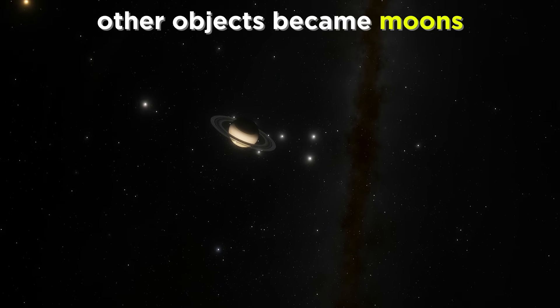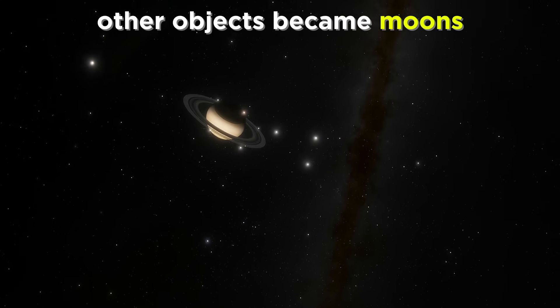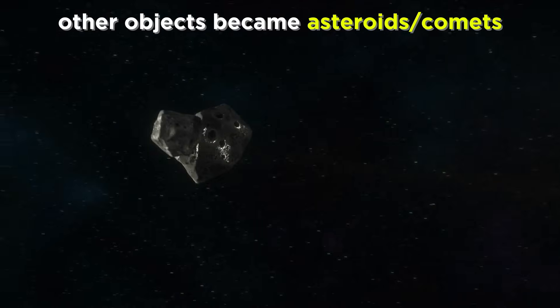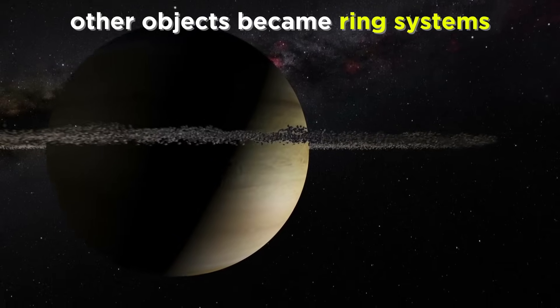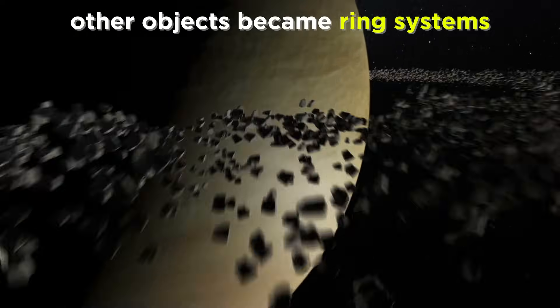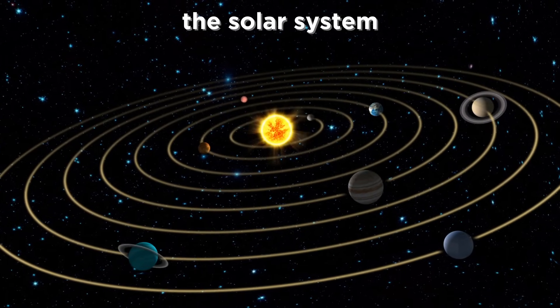Planetesimals that didn't make it into a planet accumulated into moons, or remained in the form of smaller objects like asteroids and comets, and other loose matter collected into rings around the larger planets. And thus, the solar system was born.